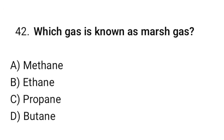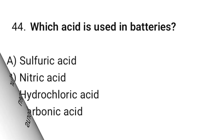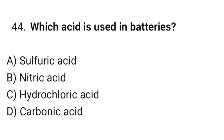Question number 42: Which gas is known as Marsh gas? The correct option is A — Methane. Question number 43: What element is essential in proteins? The correct option is B — Nitrogen. Question number 44: Which acid is used in batteries? The correct option is A — Sulphuric acid.